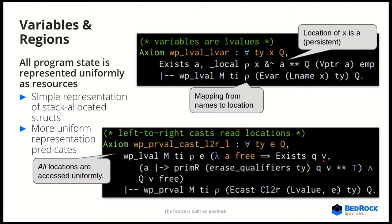Regions are our way of modeling local variables. We actually represent all program state uniformly as resources, which is not the same as the way VST works. This keeps us closer to the source language that C++ has, gives us a simple representation of stack-allocated structs, and gives more uniform representation predicates. For example, we can talk about a representation predicate for a class regardless of whether or not it is materialized — all locations in our logic are implicitly materialized.